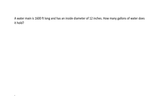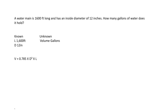A water main is 1,600 feet long and has an inside diameter of 12 inches. How many gallons of water does it hold? We'll pull out our knowns and unknowns first. What we know is the length of the pipe is 1,600 feet, the diameter is 12 inches, and we're looking for the volume in gallons. The formula is still 0.785 times diameter squared times the length, and with all volume problems it is cubic feet when solving for volume. So we need to convert the 12 inches into feet — there are 12 inches in a foot — so 12 inches times 1 foot over 12 inches. The inches cancel out: 12 divided by 12 leaves you with 1 foot.